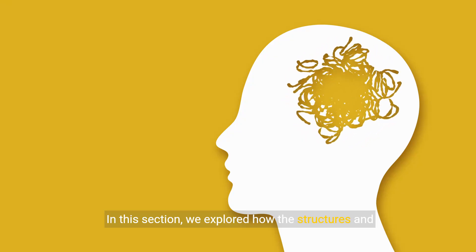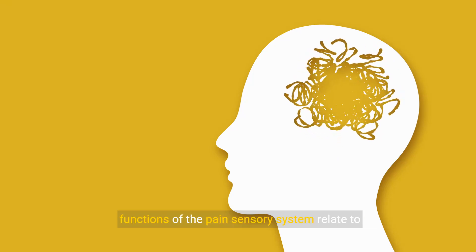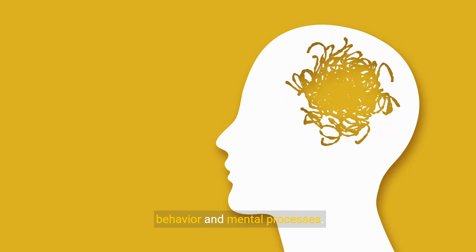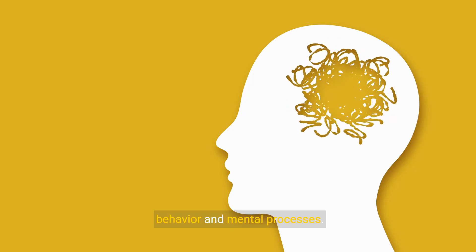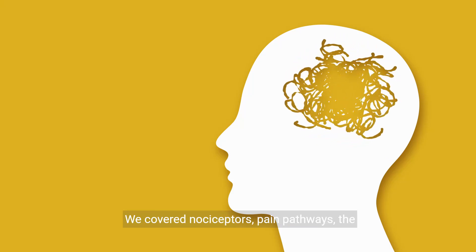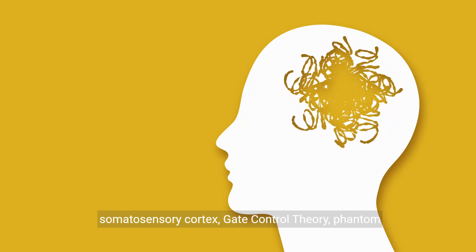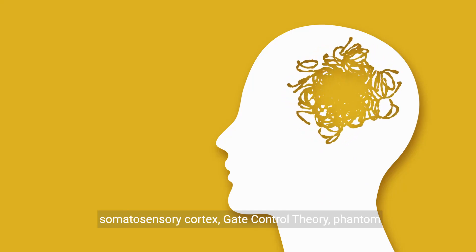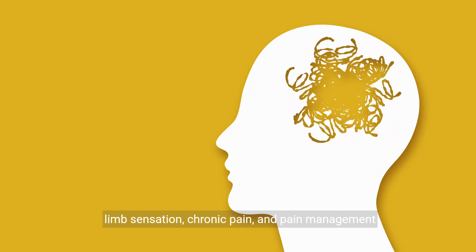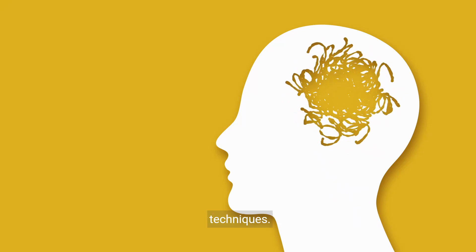In this section, we explored how the structures and functions of the pain sensory system relate to behavior and mental processes. We covered nociceptors, pain pathways, the somatosensory cortex, gate control theory, phantom limb sensation, chronic pain, and pain management techniques.